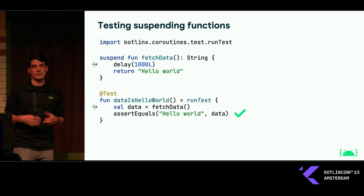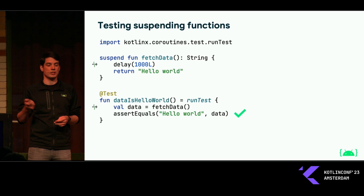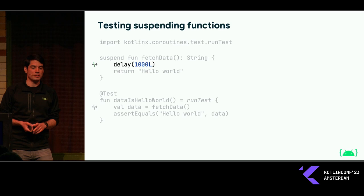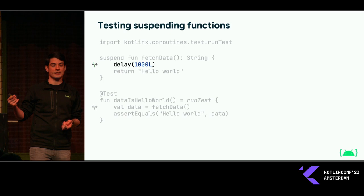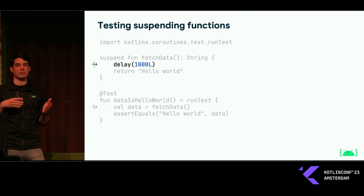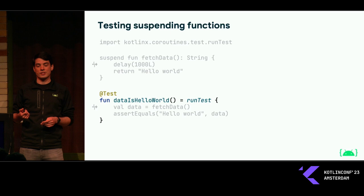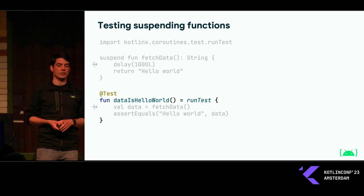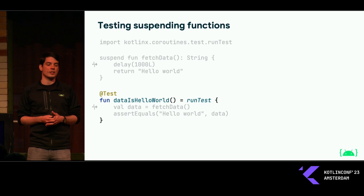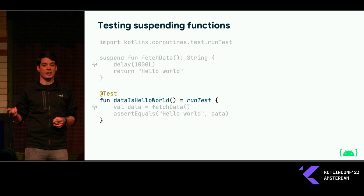By wrapping our code with runTest, we can already run this test and it would be successful. A couple of things to point out: runTest will use a test dispatcher implementation under the hood, which will skip the delay in the code that we are testing. So instead of our test taking more than a second, it will complete almost immediately. You can also see the convention of calling runTest with an expression body, returning the result of the runTest call directly from the test function. This is a nice convention to use with this library, and if you're targeting JavaScript with your tests, it's actually required as well.